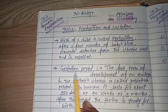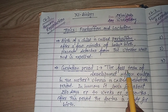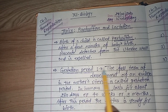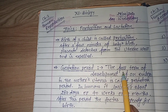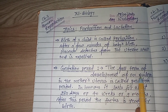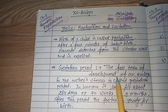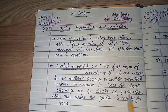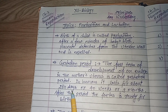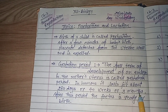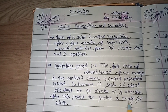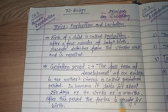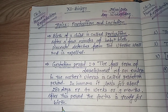Gestation period: the full term of development of an embryo in the mother's uterus is called gestation period. Gestation period کا مطلب گربہ وستہ کا سمیہ ہوتا ہے — وہ پورا سمیہ جتنے سمیہ تک mother کے uterus میں baby یا embryo کا development ہوتا ہے۔ In humans, it lasts for about 280 days, 40 weeks, or 9 months. After this period, the fetus is ready for birth and delivery.